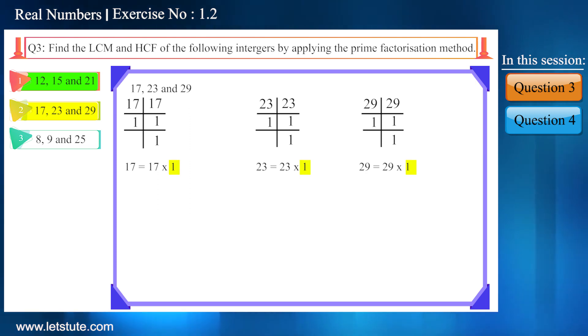And we know that prime numbers are divisible by one or itself. Therefore we can write down its factors in this way. And as you can see here, except one there is no numbers which are common in their factors. Therefore, the product of these three numbers will be their LCM. On multiplying we will get 11,339.